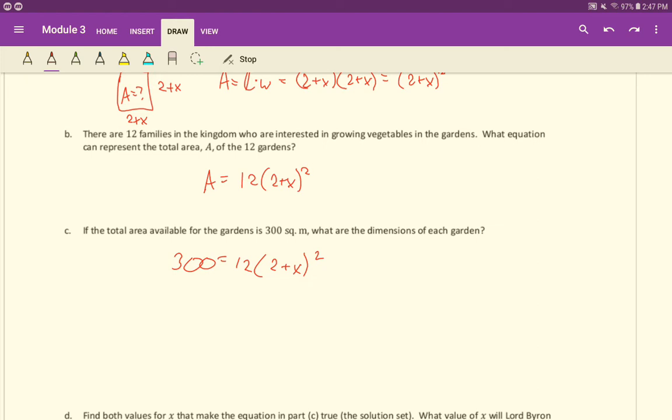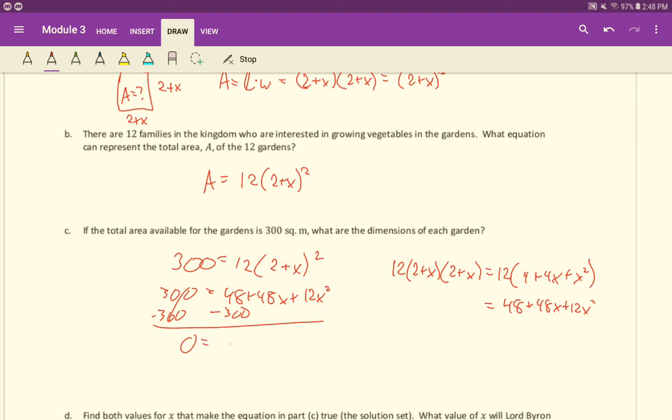In the last set of videos, in lesson one, we used factoring. In some sense, this is already factored, but it's not equal to zero. So what we could do is expand this out. We could do 12 times (2+x) times (2+x). That would be 12 times (4 + 4x + x²). Then it would distribute 12, so it would be 48 + 48x + 12x². Then we would have 300 over here equals 48 + 48x + 12x². We'd subtract the 300 over.